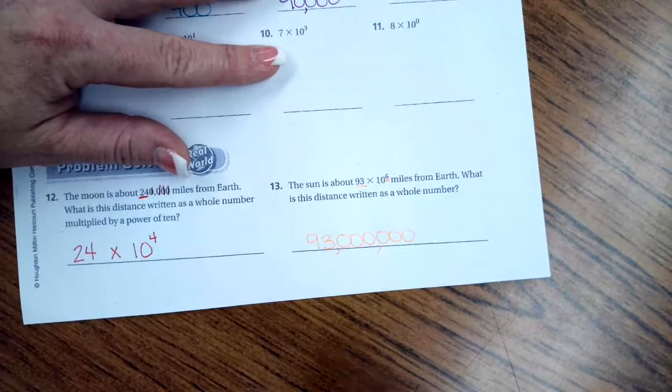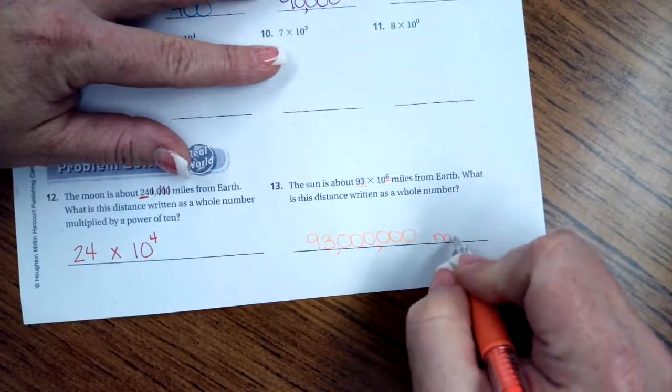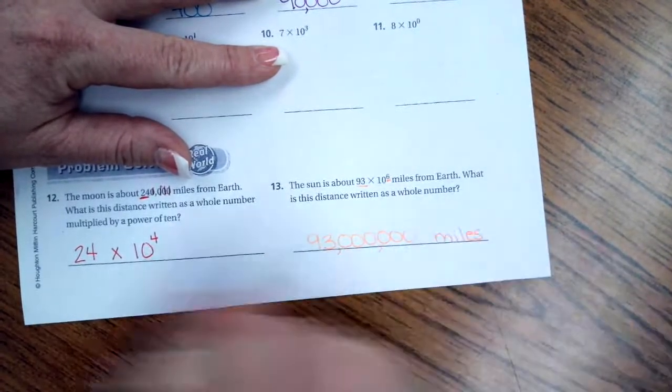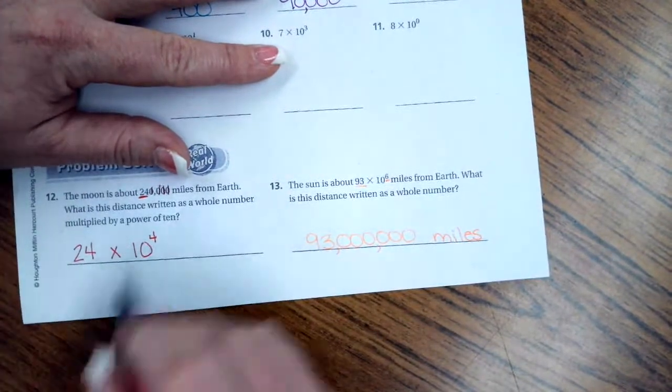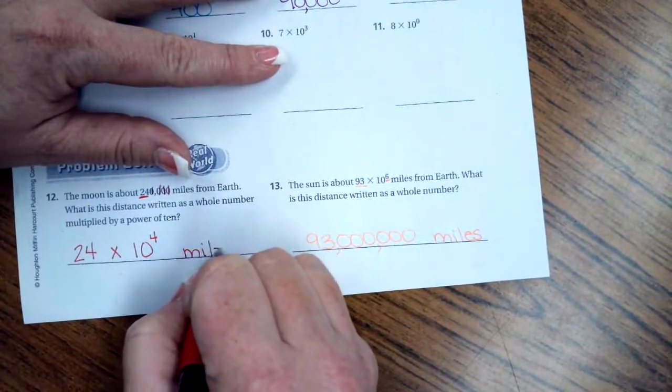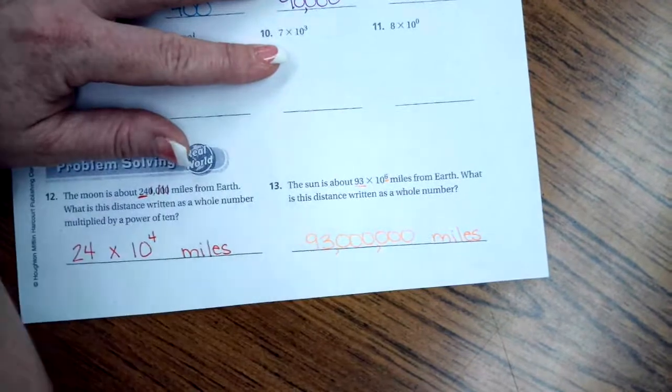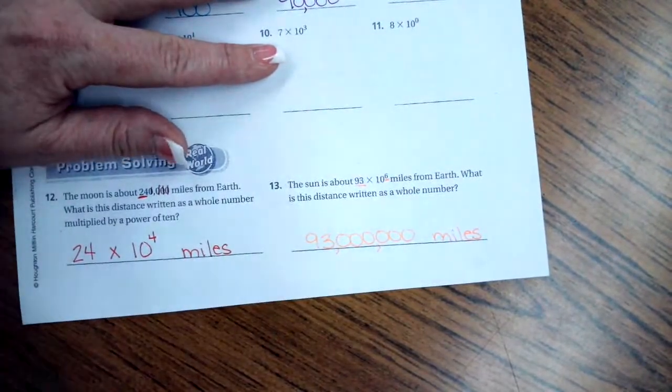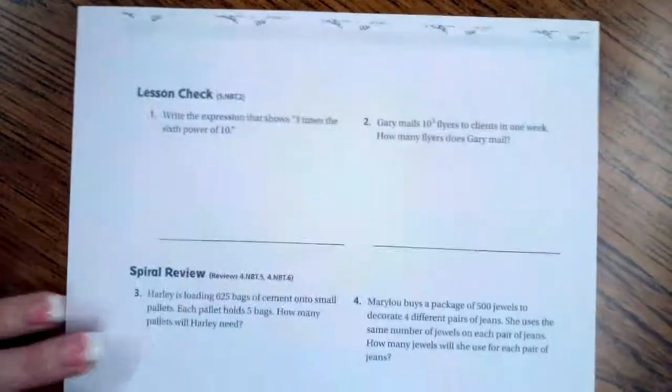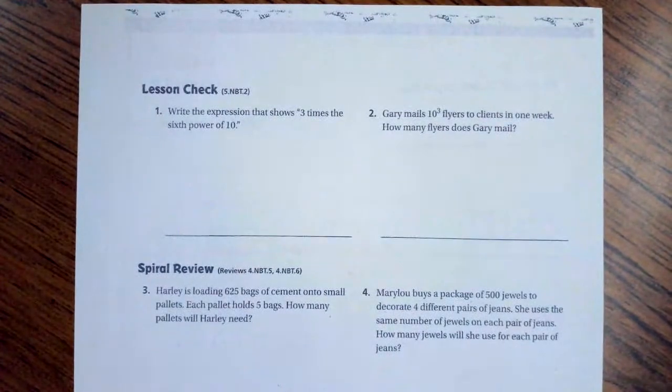We should probably label that miles. We should also label this one miles—it's talking about miles. Word problem, word answer. We're going to go over to the back now where you guys are going to do the lesson check just like always, and I'm going to go down and do number three.